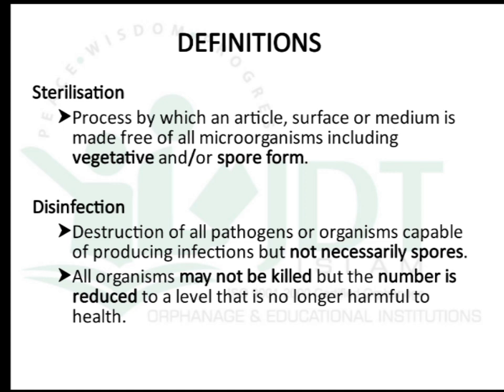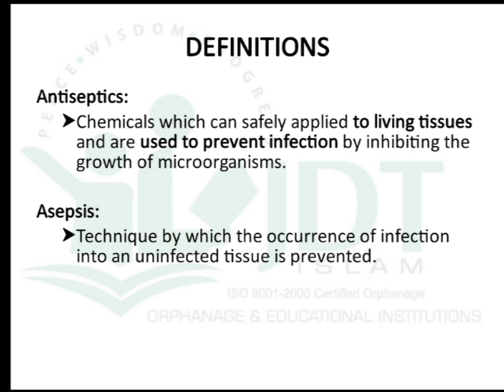In disinfection, all organisms may not be killed, but there will be a reduction in the number of microorganisms to a level that is no longer harmful to human health. If we are doing the disinfection process on a live tissue it is known as antisepsis, and the agents applied safely to living tissue are known as antiseptics, which are used to prevent infection by inhibiting the growth of microorganisms.